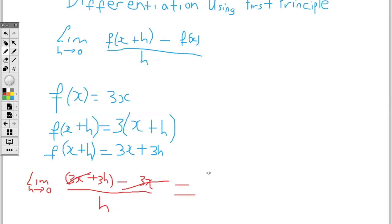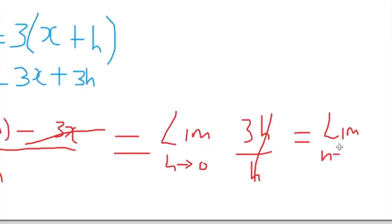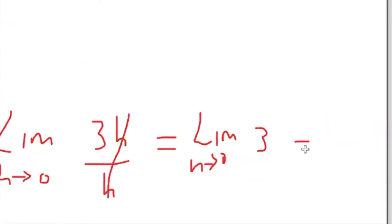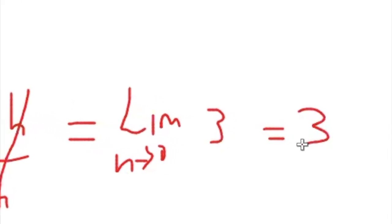So I'll rewrite this as the limit as h tends to 0 of 3h over h. The h cancels, so I'm left with the limit as h tends to 0 of 3. The limit of a number is a number, so the answer is 3.